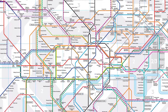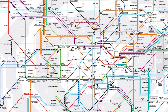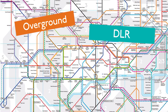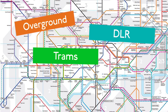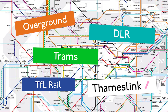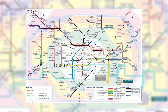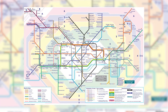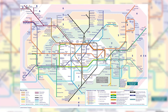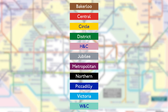The London tube map currently shows 16 modes of transport if you include the Overground, DLR, Trams, TFRL and Thameslink. But originally it was just pure tube, and today there are 11 tube lines on the map, all with names. But how did they get those names?